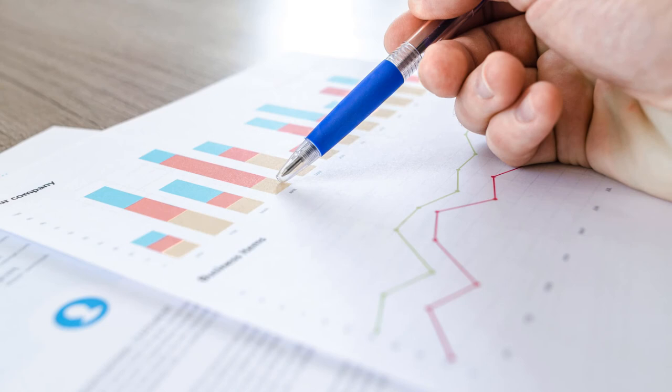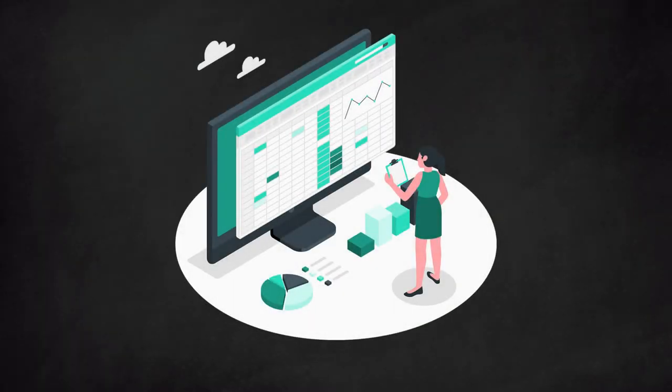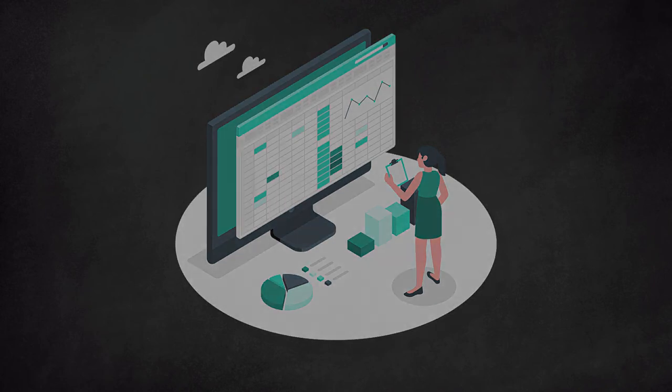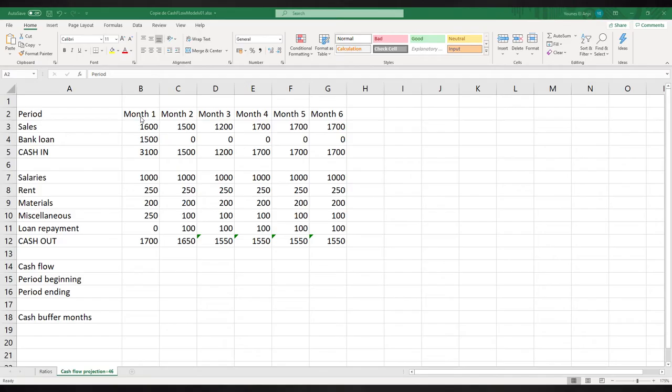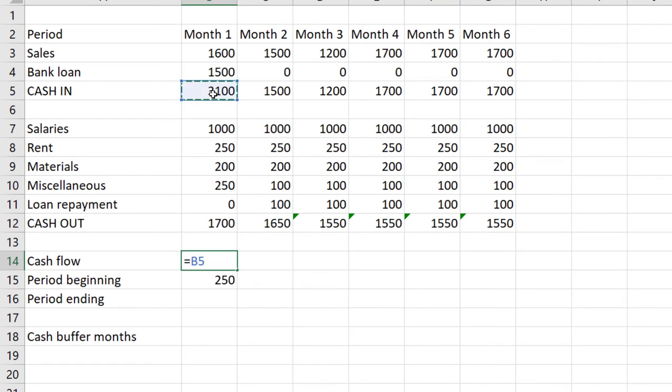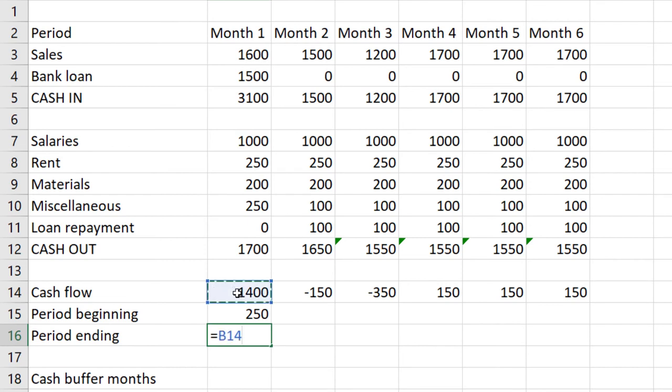Now how do we predict our future cash position? We can do this with a simple Excel model. First, we determine the granularity of cash flow projection: quarters, months, weeks, or even days. In our example, we go for months. Next, we list all our cash inflows and outflows at the time you expect them to occur. We do the same for our cash expenses. Cash in minus cash out is our monthly cash flow. Now, we did not start with a zero cash balance. At the beginning of month 1 we had 250 in cash. The cash flow for month 1 is 1400. This adds up to 1650, which is the cash level at the end of the month. The ending of month 1 is the beginning of month 2 and so on.